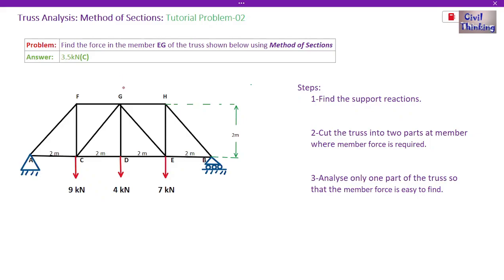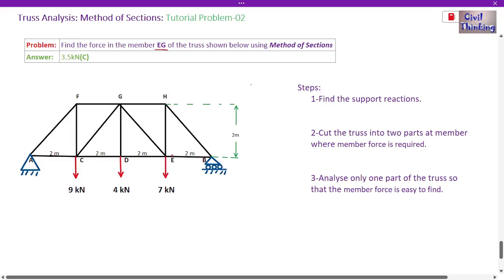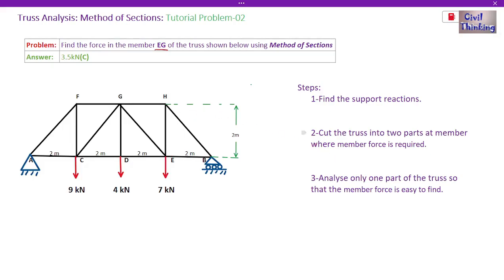In this class we will learn the method of sections by solving this tutorial problem. If you want to find the force in all the members of a truss, you apply the method of joints. But if you have to find the force in a particular member — one, two, or only a few members — then you can use the method of sections. In this problem we have to find the member force in the EG member, which is this inclined member.